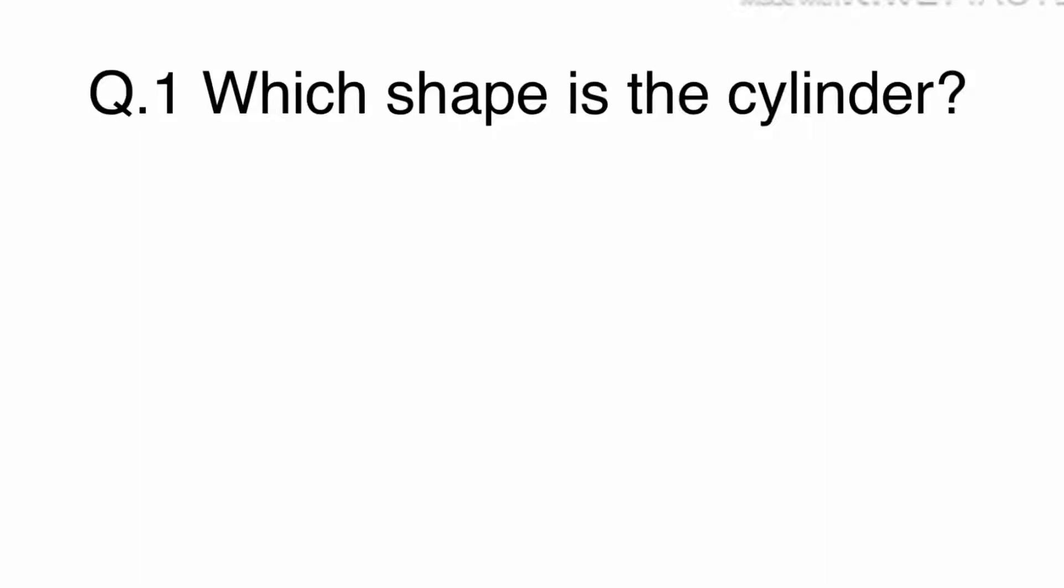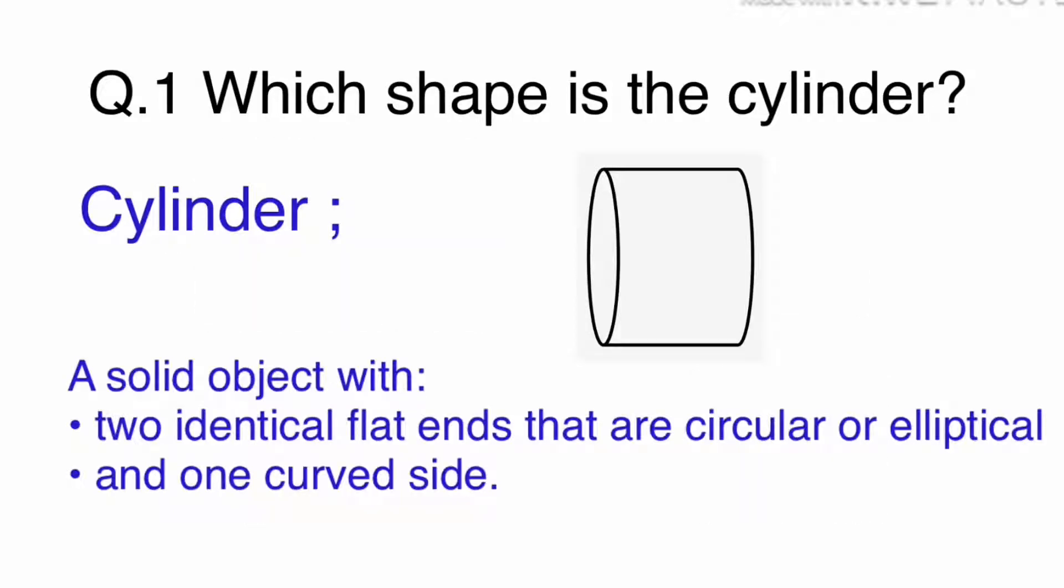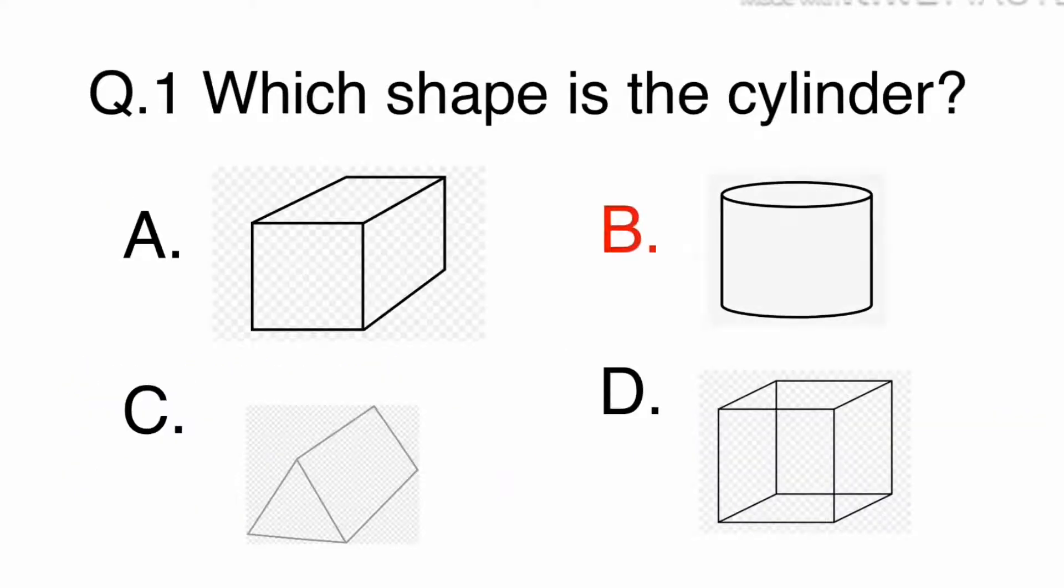Question 1. Which shape is the cylinder? A cylinder is a solid object with two identical flat ends that are circular or elliptical and one curved side. The answer is B.